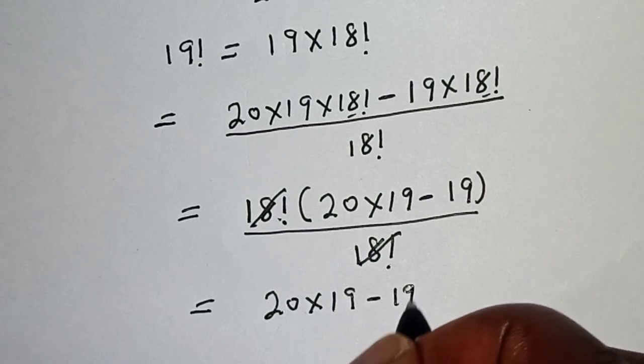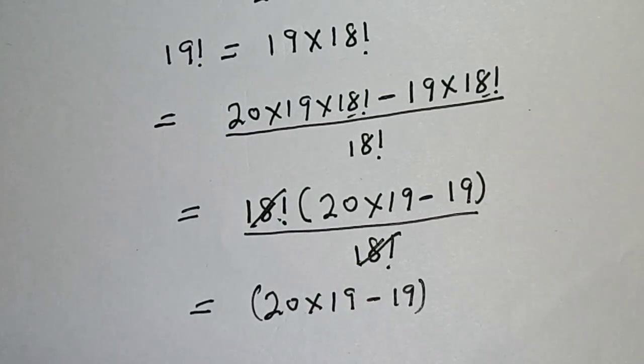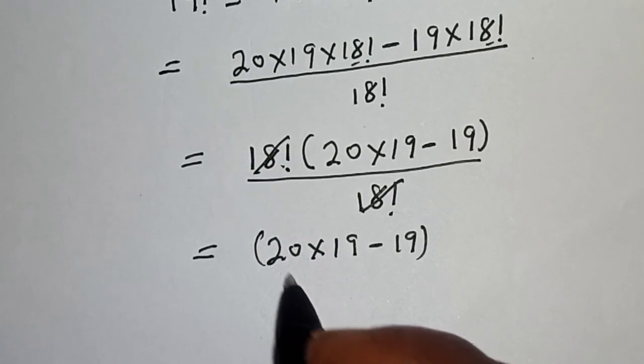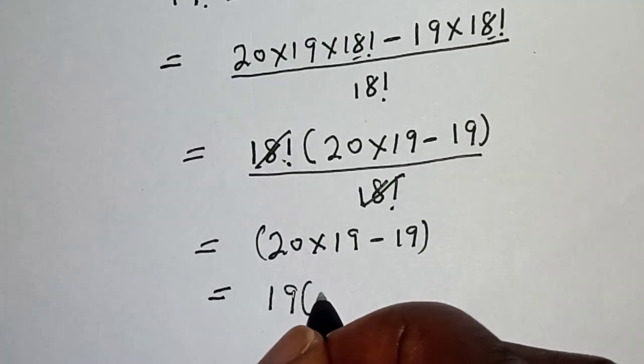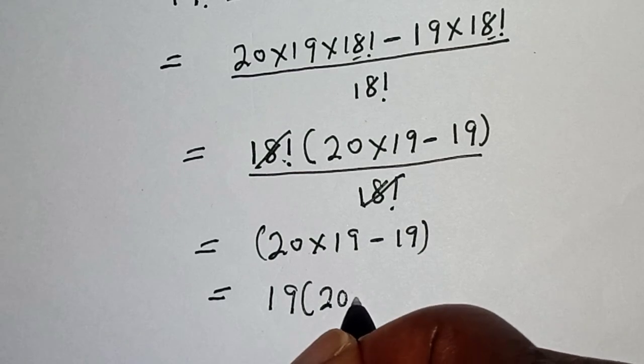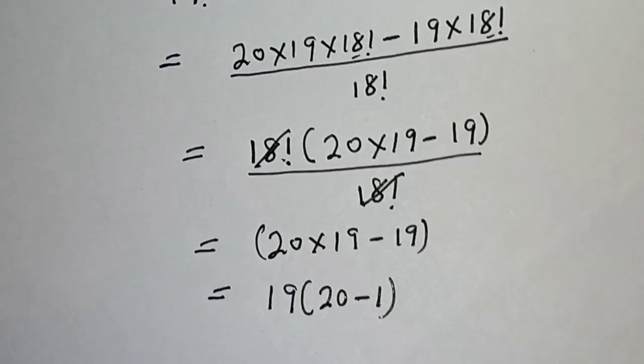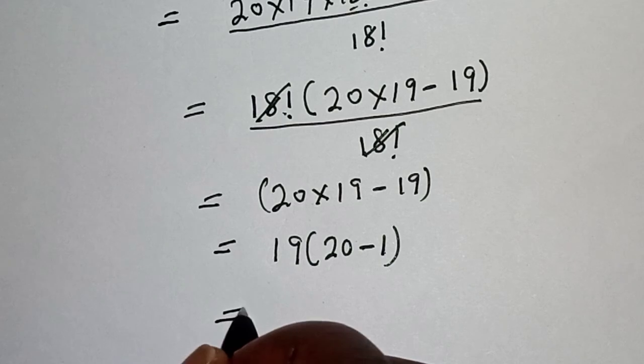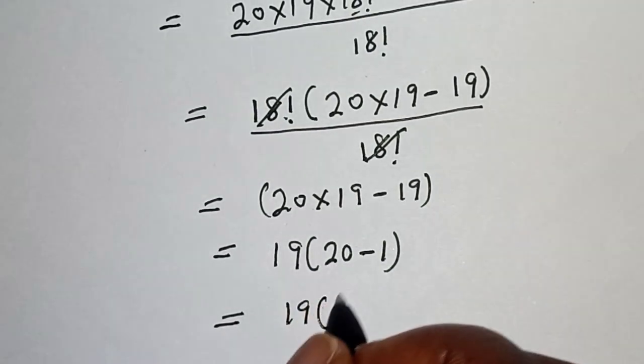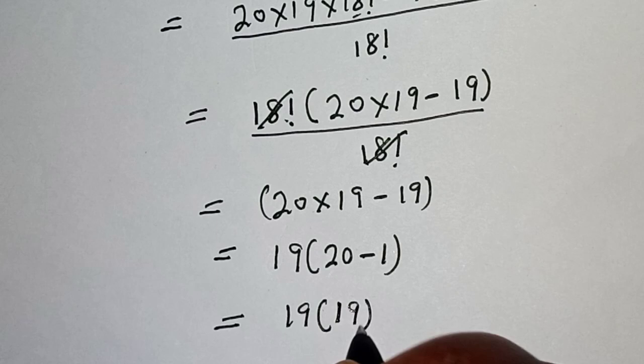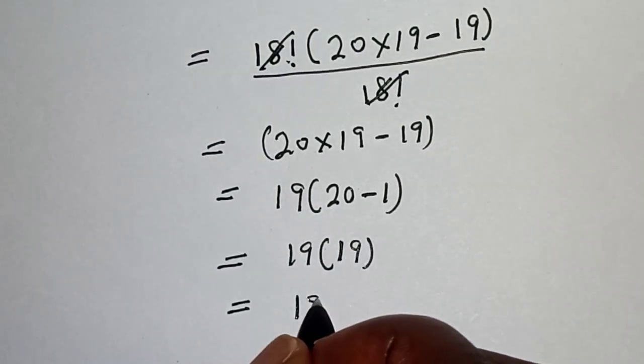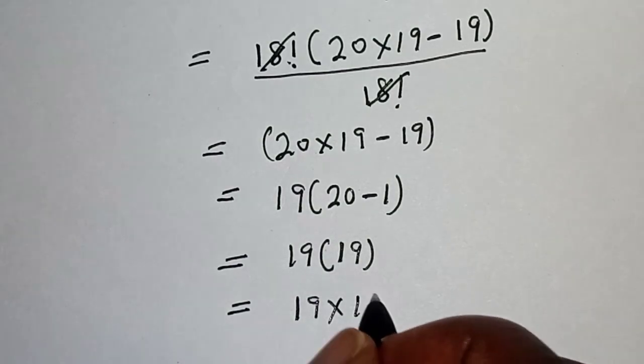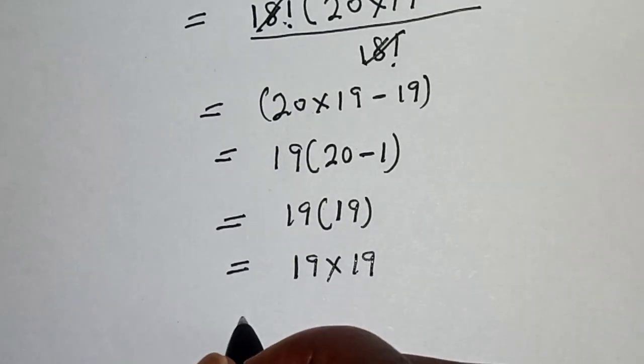Now 19 is common, let's bring it out. This is 19 bracket, 20 minus 1. This is 19 bracket, 20 minus 1 is 19, and this is equal to 19 times 19.